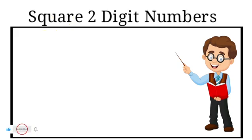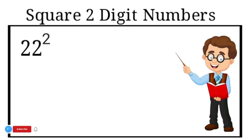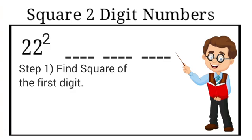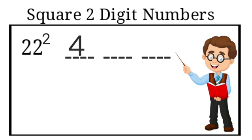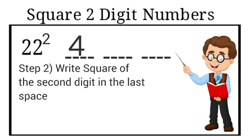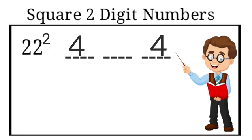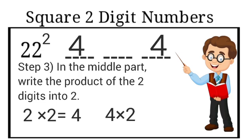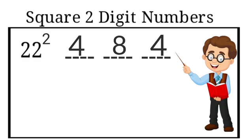Let me explain with another example. We have to find the square of 22. First, divide your answer into three parts. For the first part, square the first digit: 2 squared is 4. For the last part, square the last digit: 2 squared is 4. For the middle part, find the product of the two digits — 2 times 2 is 4 — then multiply by 2, giving 8. So the middle part is 8.